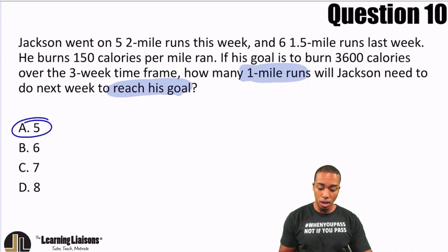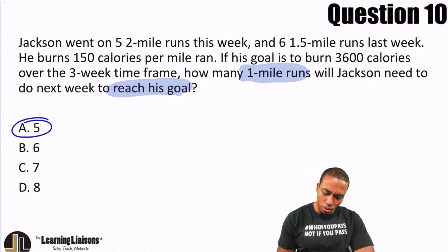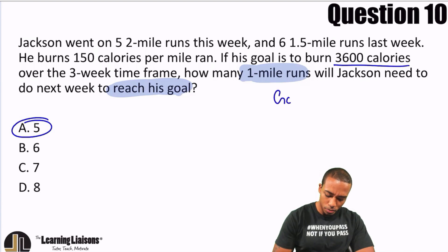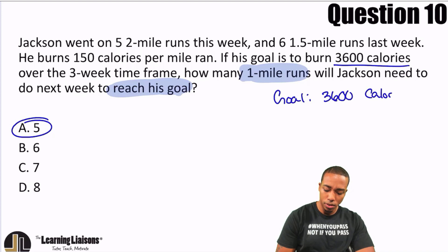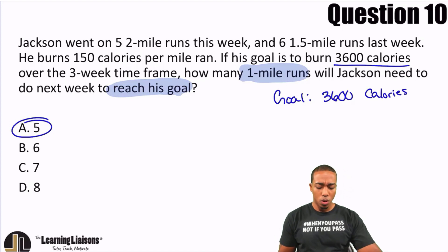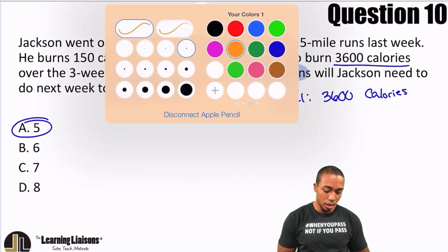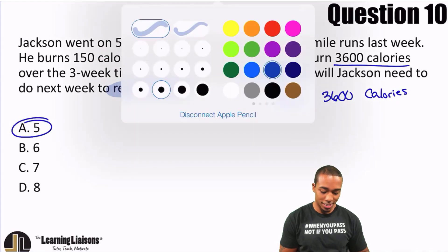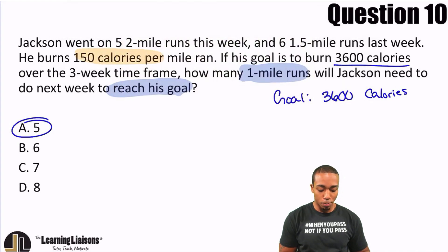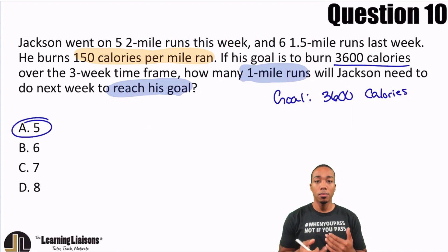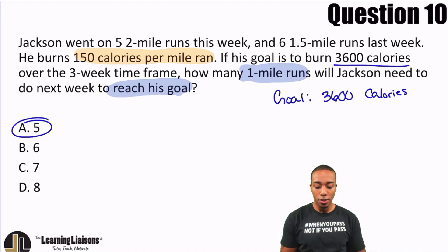So let's go ahead and figure that out — we're looking for how many miles. We know that he's trying to burn 3,600 calories, so his goal is 3,600 calories. Now let's figure out how many calories he's burned so far. He burns 150 calories per mile. So we can figure out how many miles he ran so far, multiply it by 150 to get the total number of calories, and then subtract that from the 3,600.